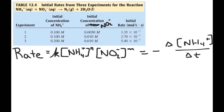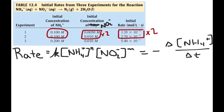If we look at experiments one and two, we see that there is no change in the concentration of ammonium used. But between experiment one and experiment two, we have a doubling of the concentration of nitrite. Looking at the rates, we also see a doubling of the initial rate of the reaction from experiment one to experiment two. That means that the value of M in this rate law is one — it is first order with respect to nitrite because doubling the nitrite concentration doubles the rate.